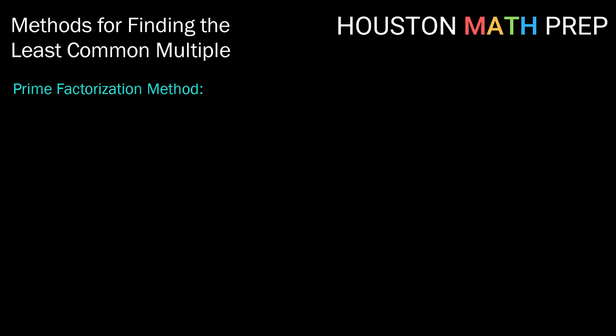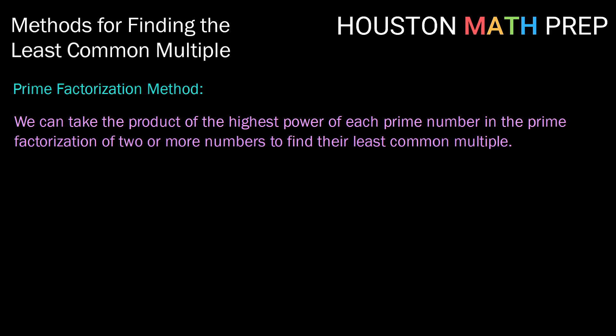Our final method that we're going to talk about in this video is the prime factorization method. So we can take the product of the highest power for each prime number in the prime factorization of two or more numbers, and that will be those numbers' least common multiple. For example, let's use the prime factorization method to find the least common multiple of 6 and 20.